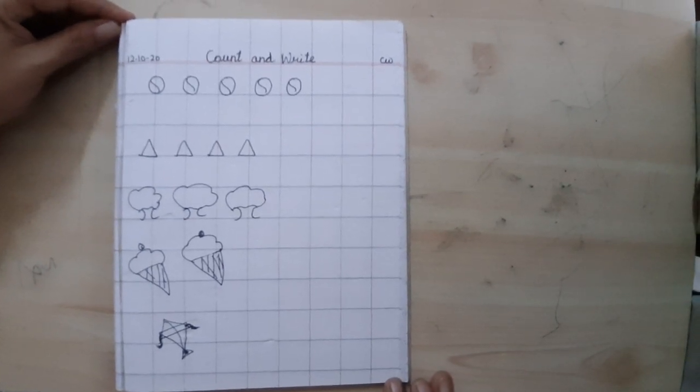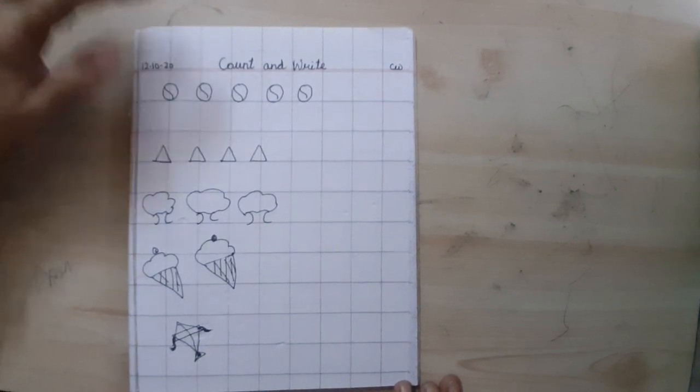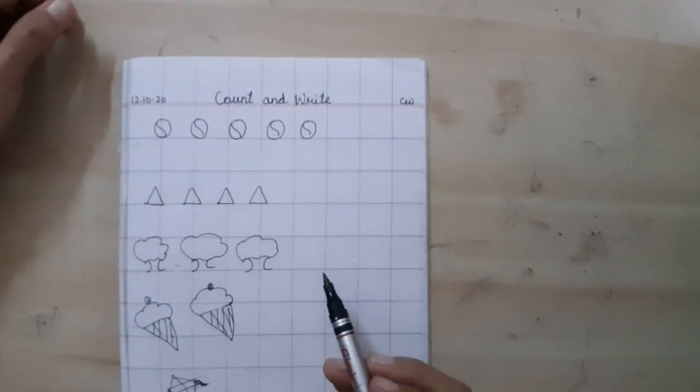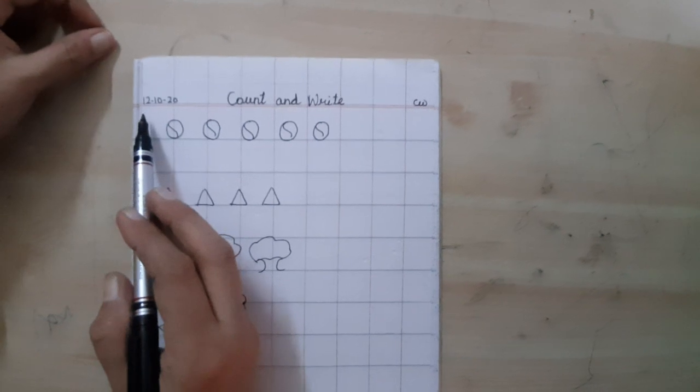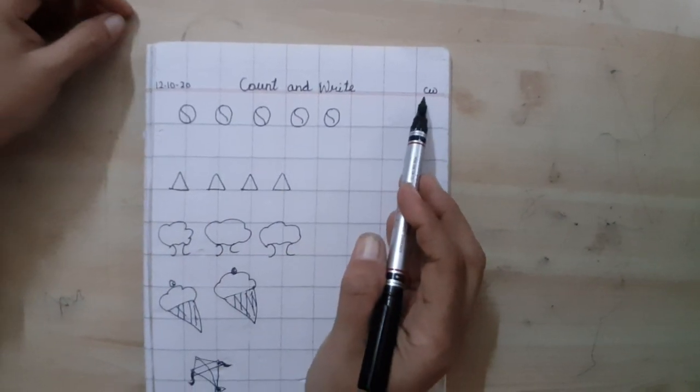Good morning nursery class. Today I am going to tell you topic count and write. First of all you have to write down date 12, 10, 20 then classwork.